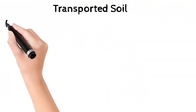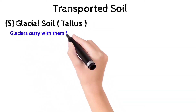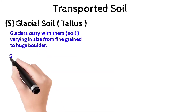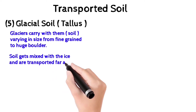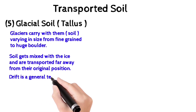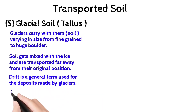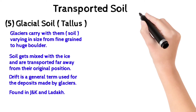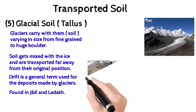The fifth one is glacial soil, or talus. Glaciers carry with them soils varying in size from fine grain to huge boulders. Soils get mixed with ice and are transported far away from their original positions. Drift is a general term used for deposits made by glaciers. It is found in Jammu and Kashmir and many other areas.